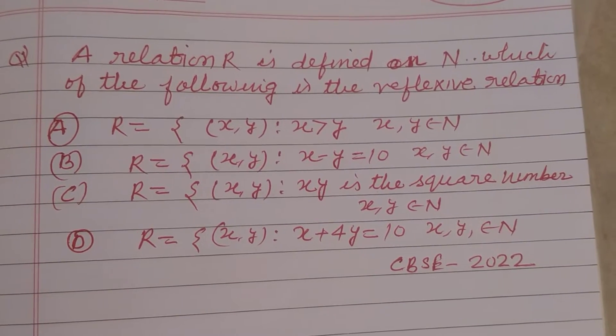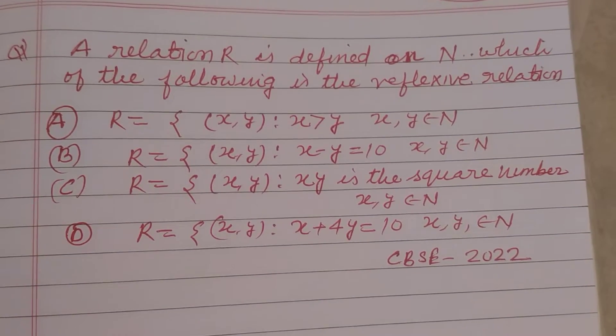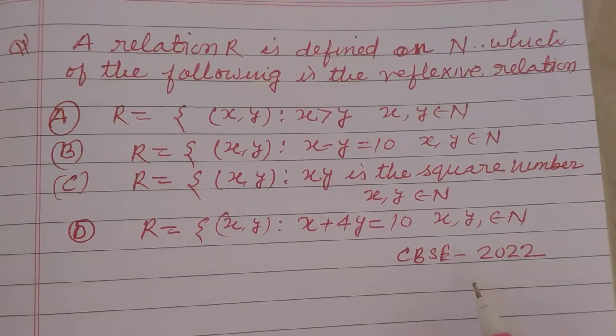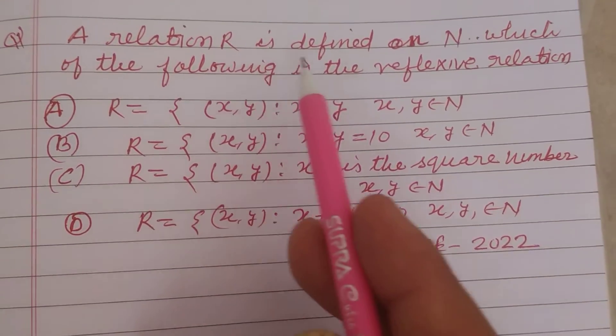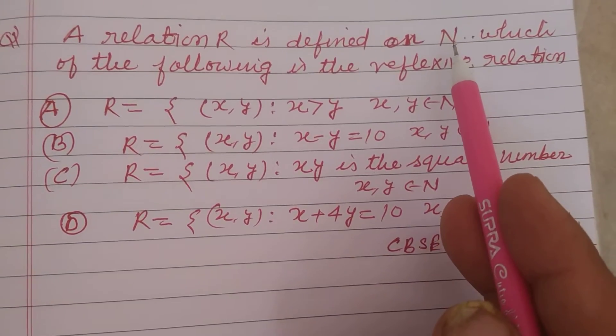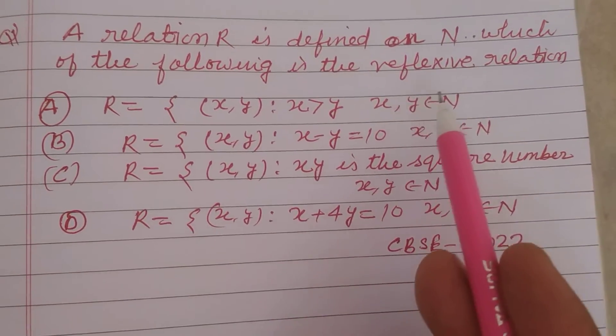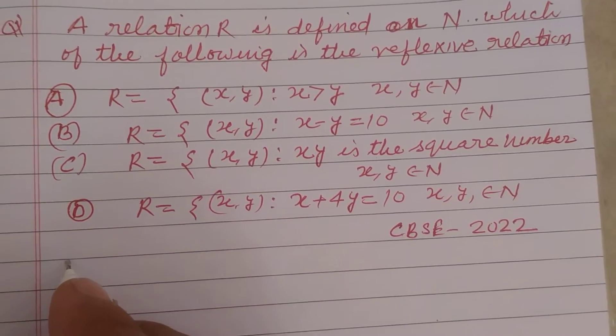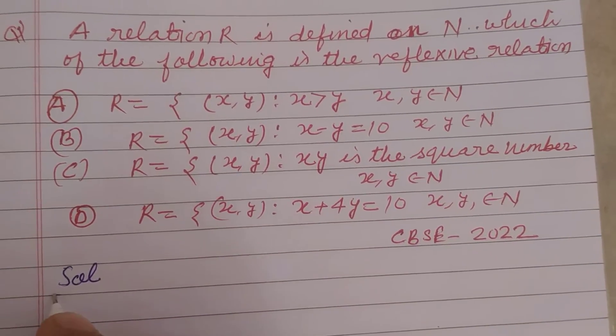Hello students, welcome to this YouTube channel. This question is from relation and function asked in CBSE 2022 board exam. The relation R is defined on natural number N. Which of the following is the reflexive relation? So students, here four options are given and different relations are also given.